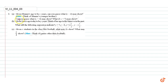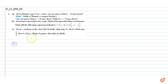In this question, Part A: given Manu's age to be x years, can you guess what x minus 2 may show? Think of Manu's younger brother. Can you guess what x plus 4 may show? What may 3x plus 7 show?